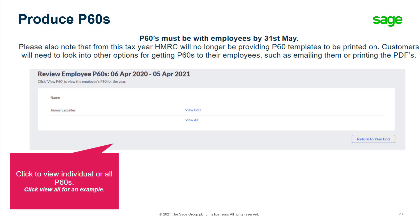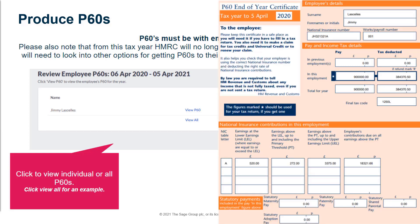Lastly, let's look at how you can review the employees' P60s. You can view an individual P60 or click All to see them in one view and save time. Here is an example of the P60 as it is shown.